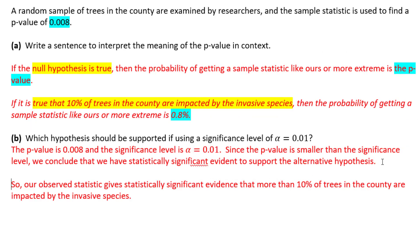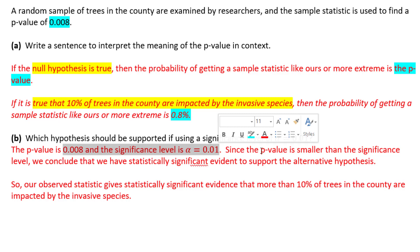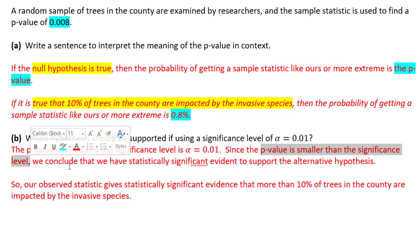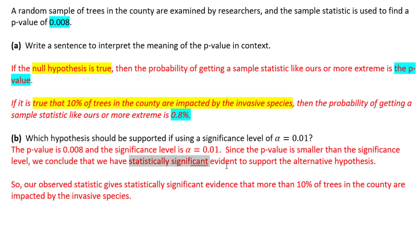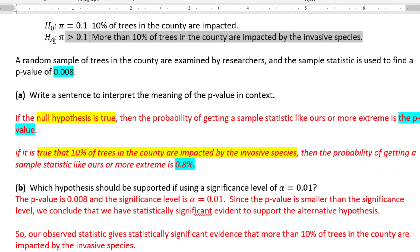For us, the p-value is 0.008 and the significance level is 0.01. So the p-value is smaller than our significance level. Therefore, we reject the null hypothesis and we have statistically significant evidence to support the alternative hypothesis. In context, we are saying we support the alternative — that pi is greater than 0.1.